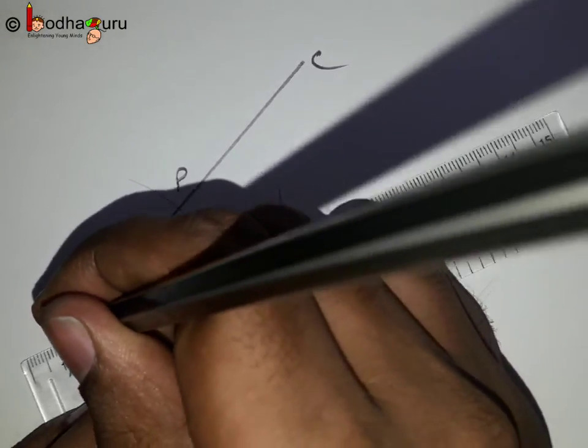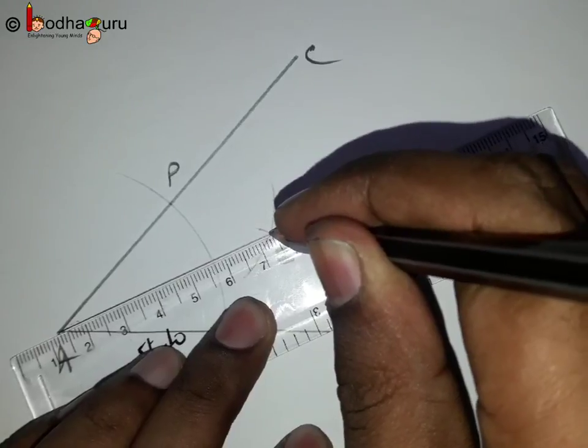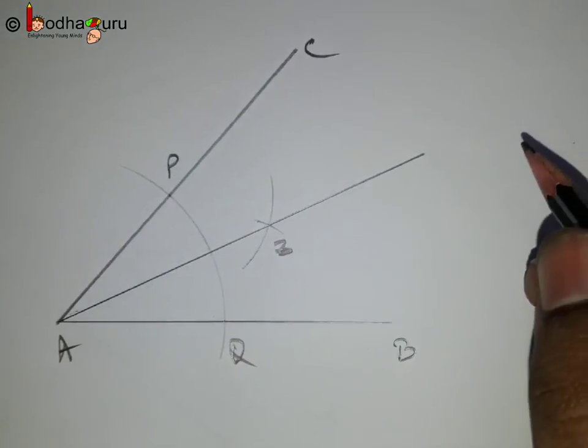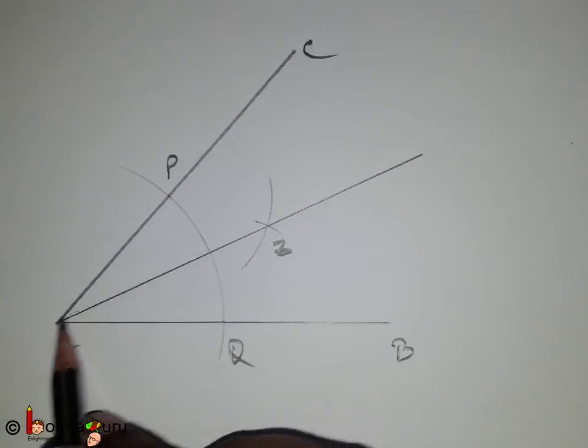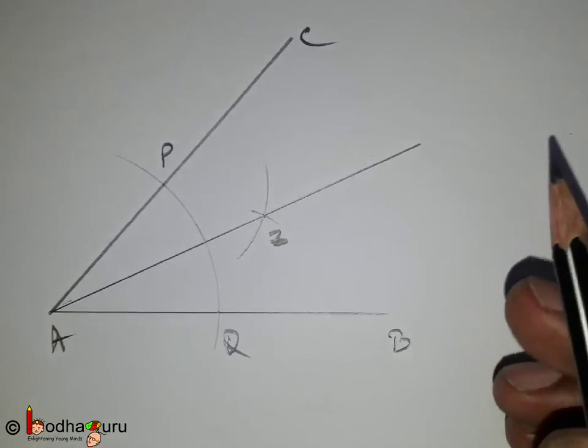We say AZ is the bisector of the angle that bisects the given angle. Thus, angle BAZ is equal to angle ZAC.